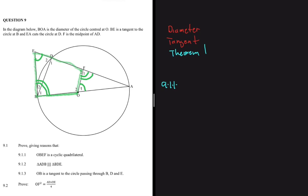We'll stick to our three keywords. Looking at diameter first: our diameter subtends angle D equal to 90 degrees, but that has nothing to do with what we're trying to prove, so the diameter is failing us here. Moving to the tangent EB, which is subtended at A, so angle B2 equals angle A — but that doesn't help us either.